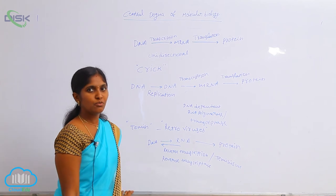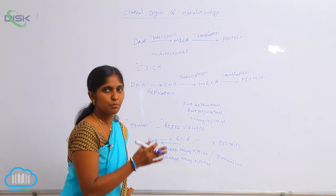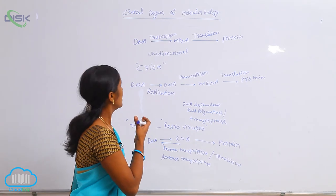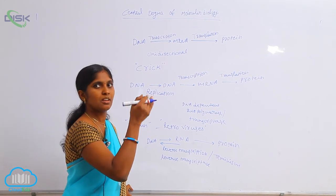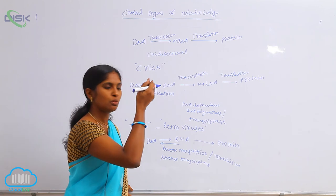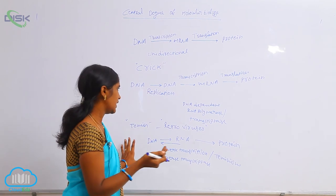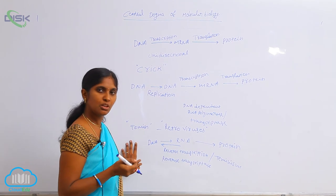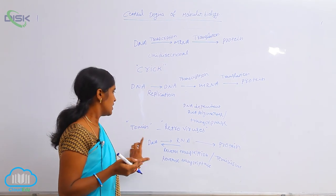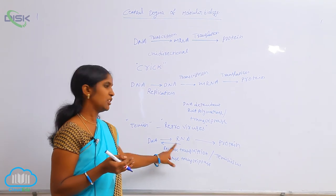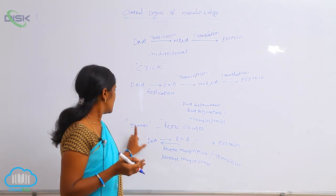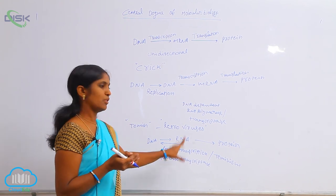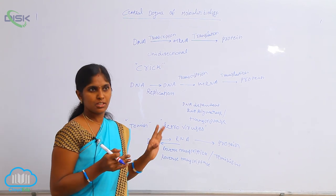Generally, the genetic information is passed unidirectionally from DNA to protein. But the exception is in retroviruses, where RNA to DNA also happens — and that is in the form of terminism.